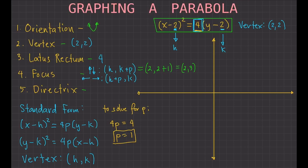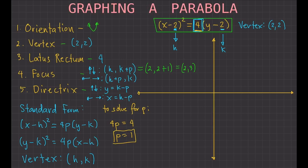The last thing we want to find is the directrix. Just like the focus, the directrix depends on the orientation, but unlike the focus, the directrix is a line. If the orientation is up or down, the directrix is y equals k minus p. If it is left or right, the directrix is x equals h minus p. Since our parabola opens upwards, the directrix is y equals k minus p, which gives y equals 2 minus 1, so y equals 1.